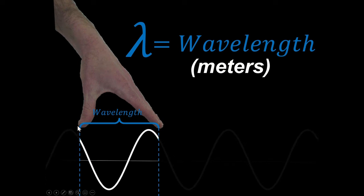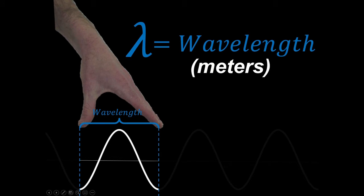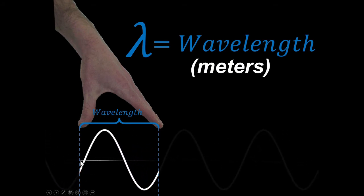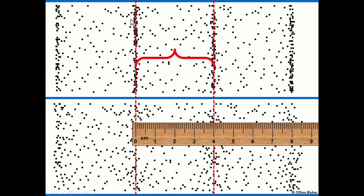One complete wave can be measured from crest to crest, trough to trough, or from where it's going down to where it goes down again — one complete wave. Likewise with longitudinal waves, we could measure it from compression to compression or from rarefaction to rarefaction. That would be the wavelength — in this case, 4 centimeters, or 0.04 meters.